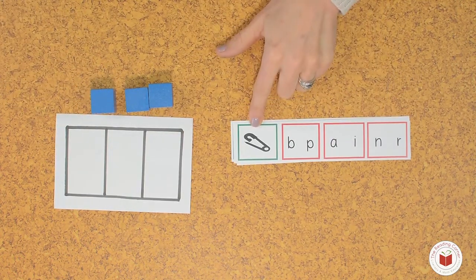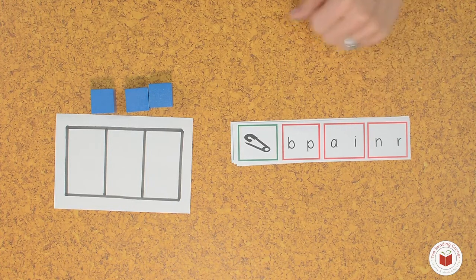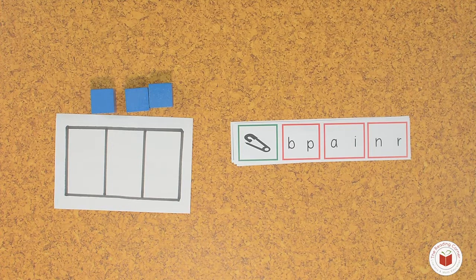This is a pin. Can you point to, or if you have the activity in front of you, circle the letters that represent the word pin?